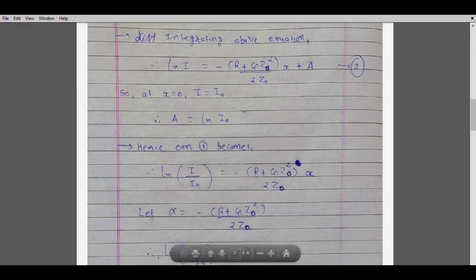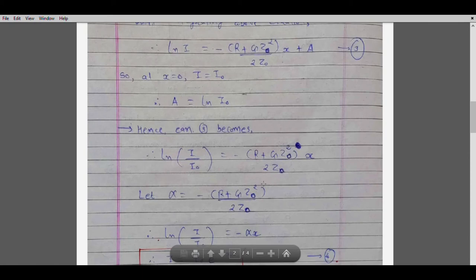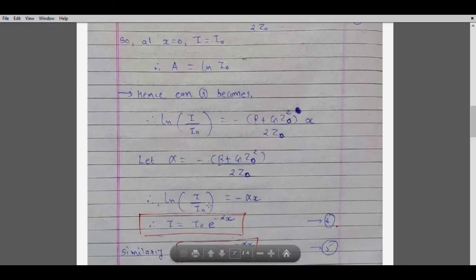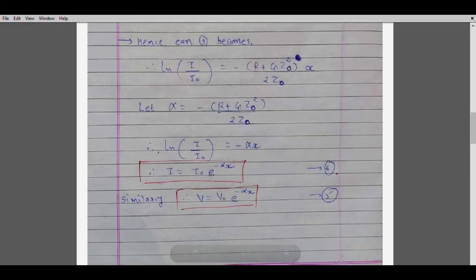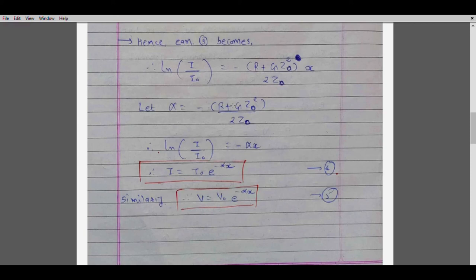Let alpha equal minus the quantity R plus G·Z0 squared, divided by 2·Z0. Substituting, the natural logarithm of I over I0 equals minus alpha·x. Taking the antilog of both sides gives I equals I0·e raised to minus alpha·x. Similarly, V equals V0·e raised to minus alpha·x. This shows that both the current and voltage waves attenuate exponentially as they travel along the line, and the magnitude of attenuation depends on alpha, which depends on the parameters of the transmission line.